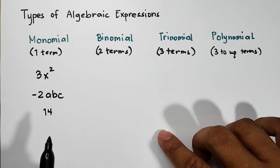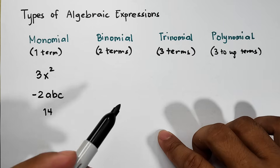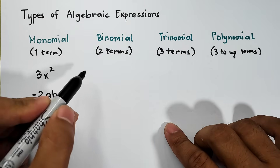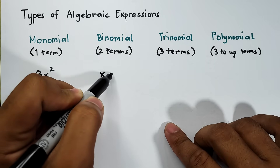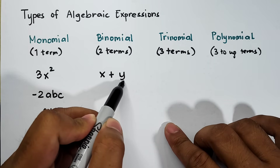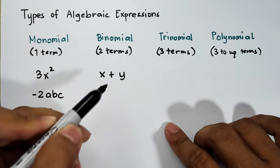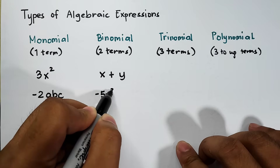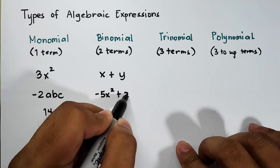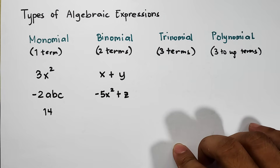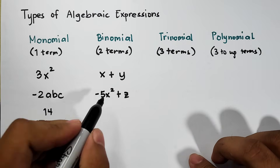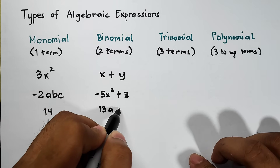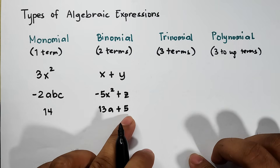For the binomial, we have 2 terms separated by the addition or subtraction symbol. A first example of a binomial is x plus y — first and second term, separated by the addition sign. Another example is negative 5x squared plus z, which is also a binomial. Let's try one more: 13A plus 5 — 1, 2 — we have 2 terms.